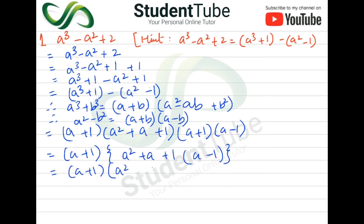Here a plus one is taken as common. Then looking at the two brackets — the a³ formula and the a² formula — in between we have a minus sign. So a plus a gives a, and a plus one and a plus one with a minus sign: plus one and plus one gives plus two. The final answer is a plus two.